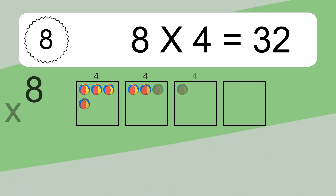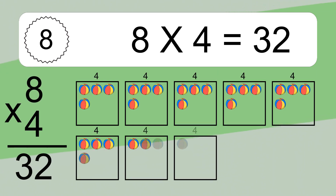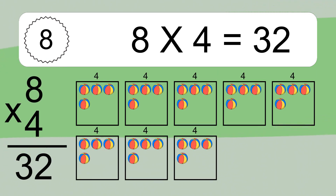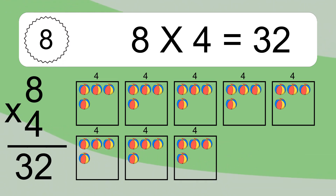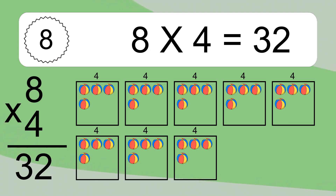8 times 4 equals what? 8 times 4 equals 32. We have 8 boxes, and each box has 4 colorful balls inside. If you count all the balls in all the boxes together, you will have 8 times 4 balls. This equals 32 balls.